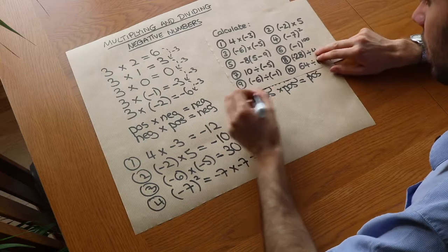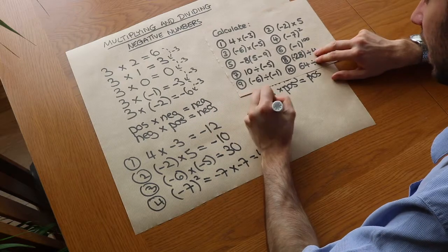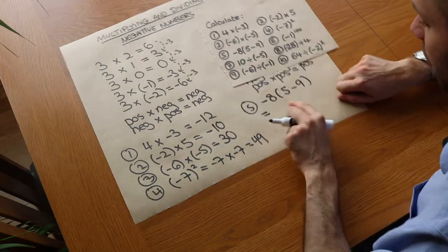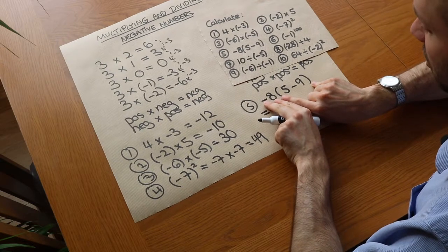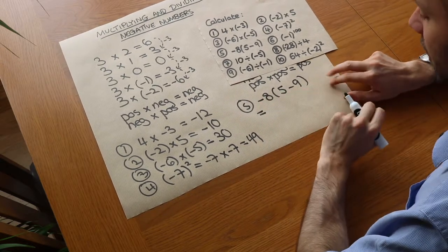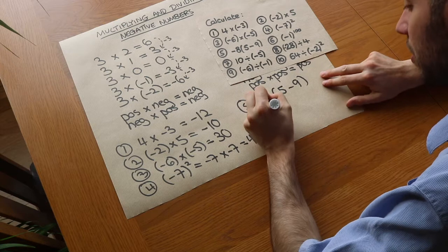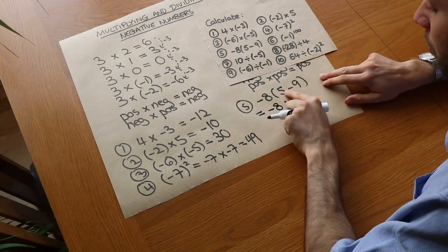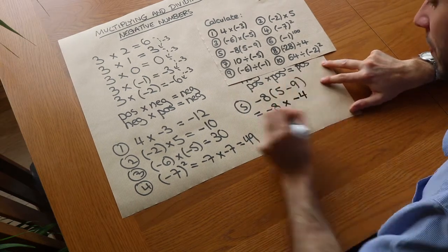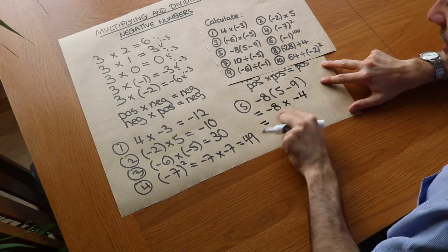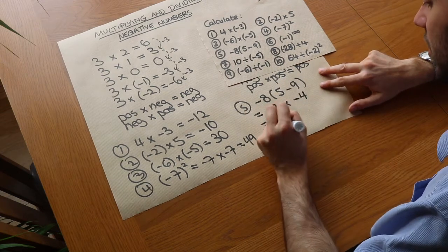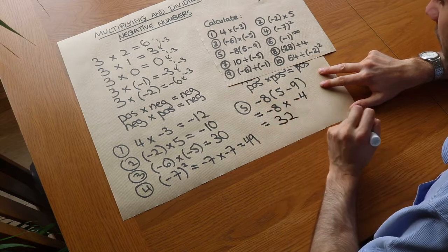What about number 5? We've got minus 8 times (5 minus 9). When you have two things next to each other it means you multiply them, so it's minus 8 times by (5 minus 9). What's 5 minus 9? It's minus 4. Then negative times negative is positive, and 8 times 4 is 32, so it's positive 32.